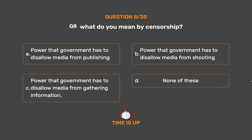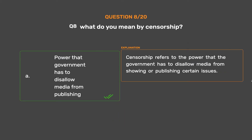The correct answer is Option A: Power that government has to disallow media from publishing. Censorship refers to the power that the government has to disallow media from showing or publishing certain issues.